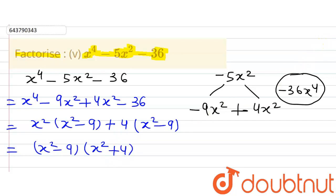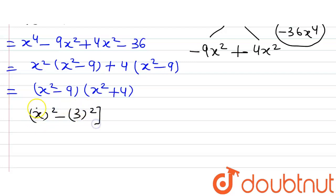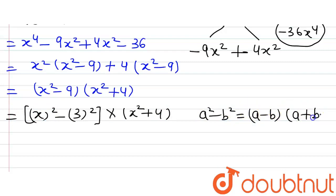Now, x squared minus 9 can be written as x squared minus 3 squared, multiplied by (x squared plus 4). We know that a squared minus b squared equals (a minus b)(a plus b), and we are going to apply this identity here.